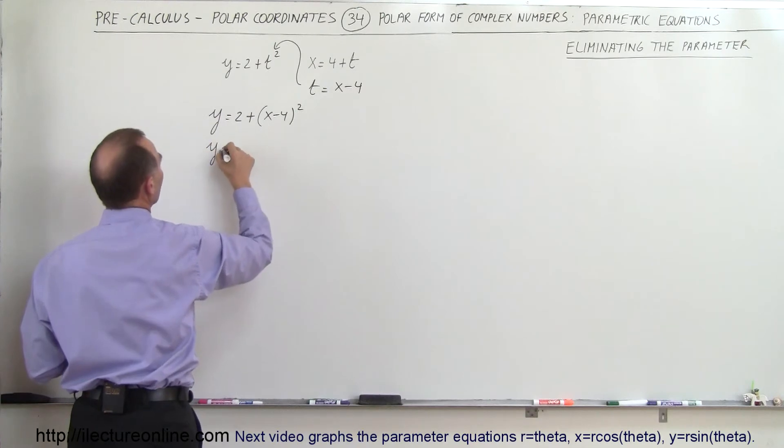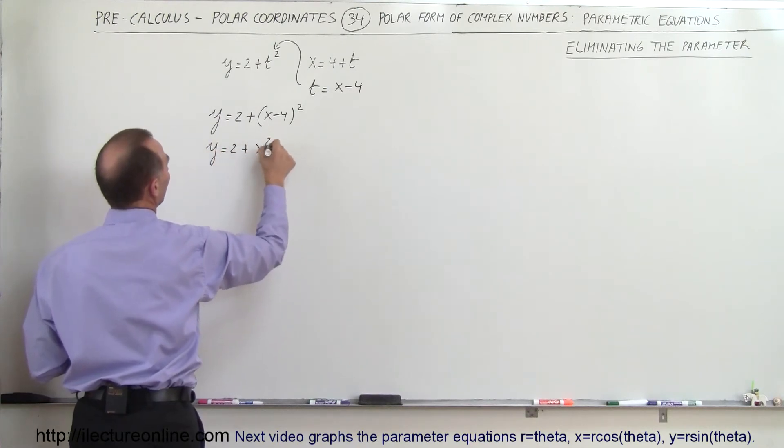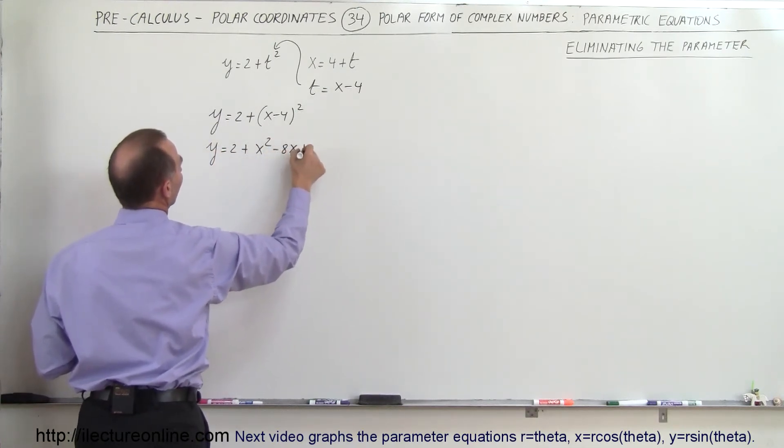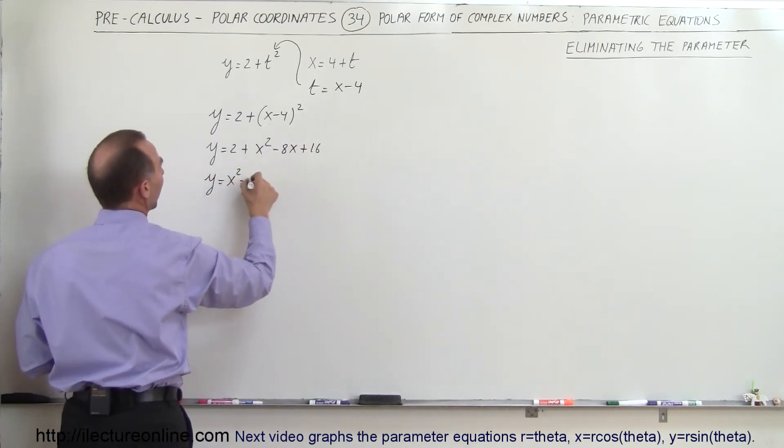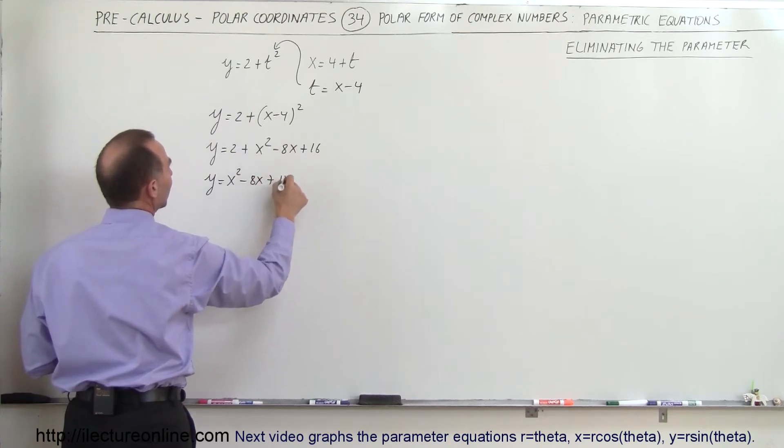This becomes y equals 2 plus x squared minus 8x plus 16, and combining like terms we have y equals x squared minus 8x plus 18.